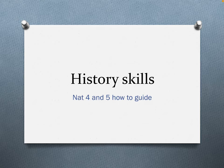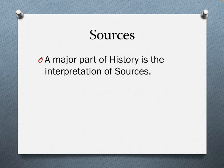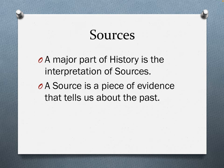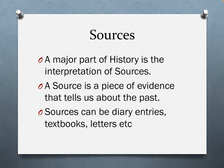Today I'm going to talk to you about the history skills that you need to pass National 4 and National 5 history. We're going to talk a lot about sources today. A major part of history is the interpretation of sources. A source is a piece of evidence that tells us about the past. Sources can be diary entries, textbooks, letters, but they can also be so much more.